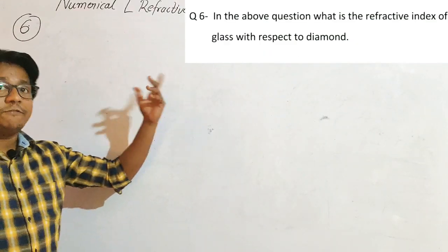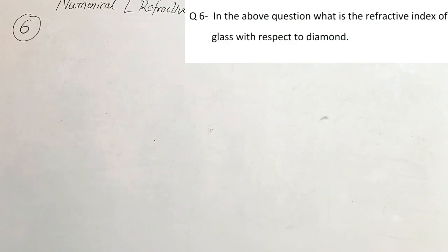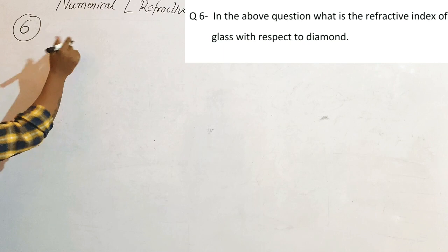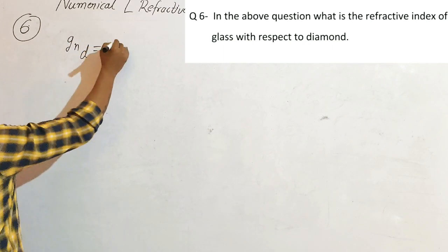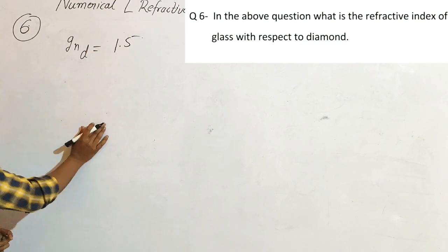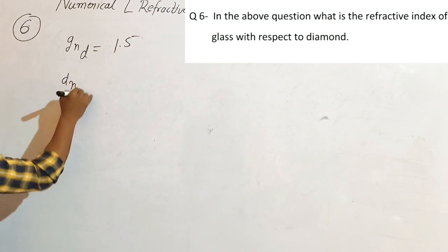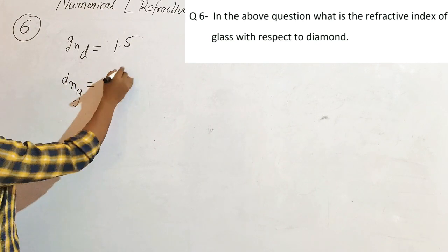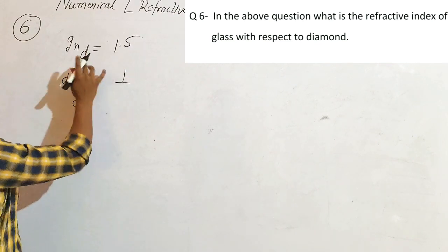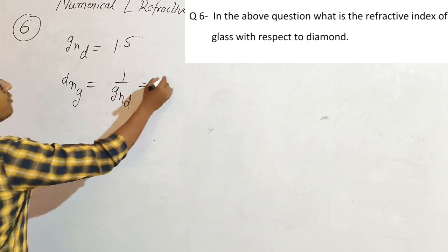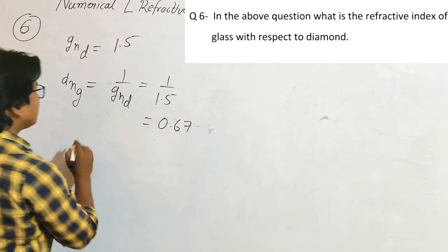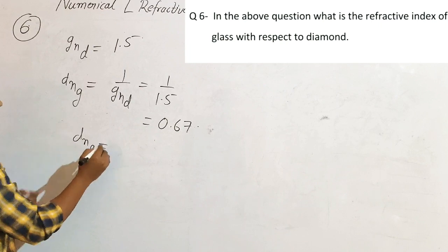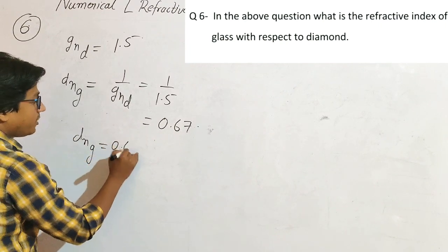In the same question, if asked: what is the refractive index of glass with respect to diamond (dng)? We found that gnd = 1.5. The refractive index of glass with respect to diamond is the reciprocal: dng = 1 upon gnd = 1 upon 1.5 = 0.67. So the refractive index of glass with respect to diamond is 0.67.